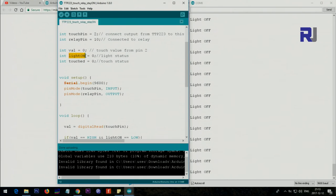These three values: val is the touch value from pin 2, and then this is light_on, another variable that shows the status of light, and then touch which shows the status of touch. You do not change these. If you are playing, play with those two.